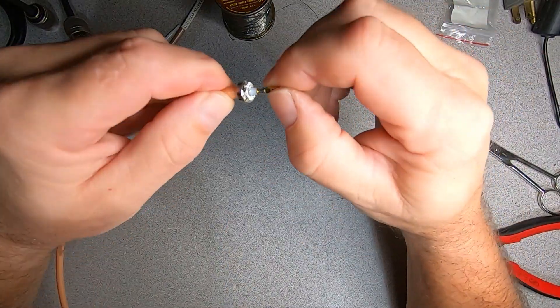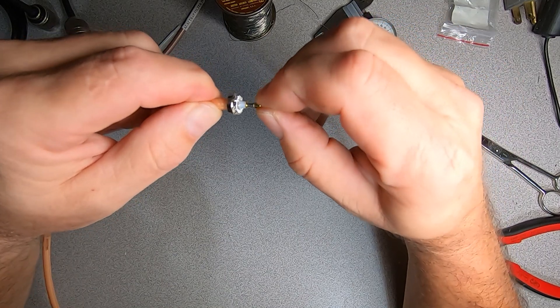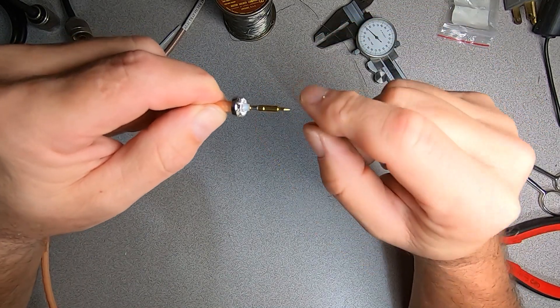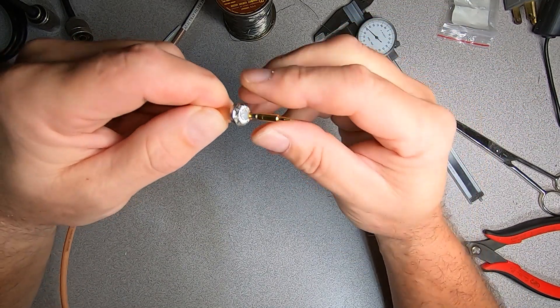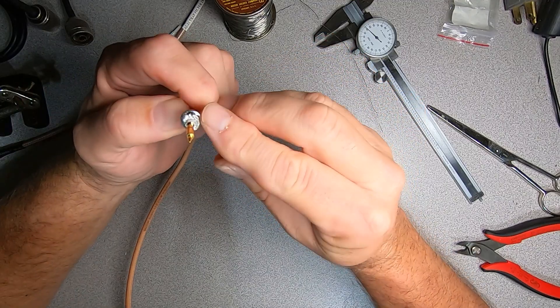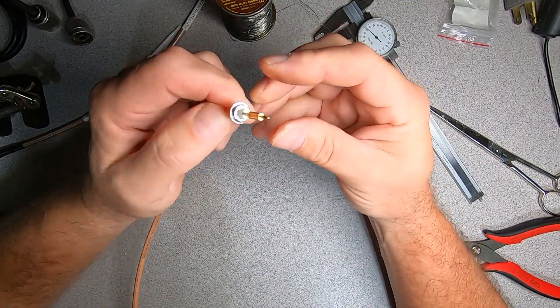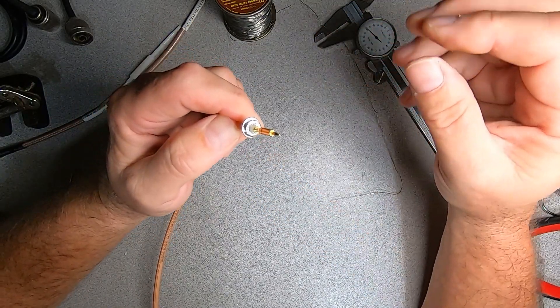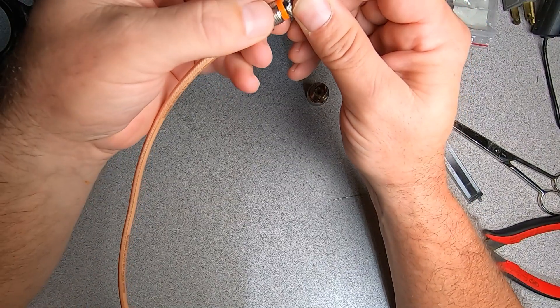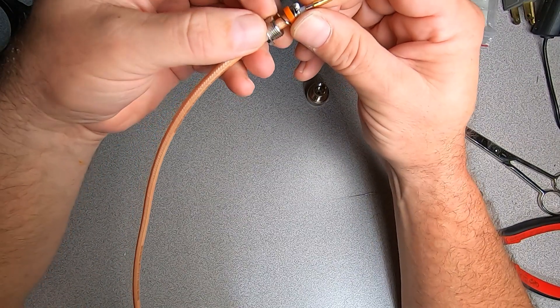Now check your work before moving forward, making sure that your center conductor is attached correctly, making sure that your braid is still dressed on your clamp. Take your gasket and place your gasket up against your clamp.